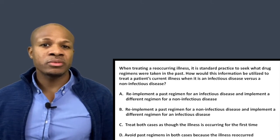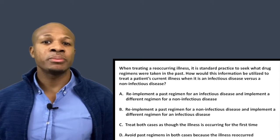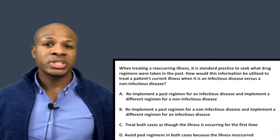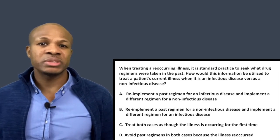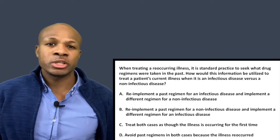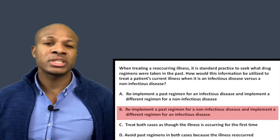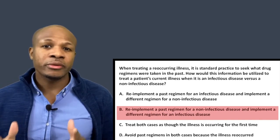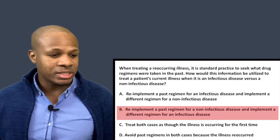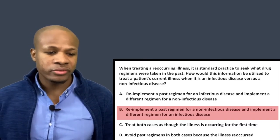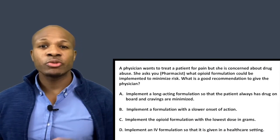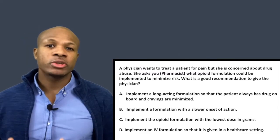When it comes to infectious disease, antibiotics can alter drug targets, and because of the risk of resistance you don't want to give the patient the same drug as last time — give them a different drug. Whereas for a non-infectious disease like obesity or hypertension, the drug target is likely the same, so you can give the same regimen that controlled blood pressure in the past. The correct answer is B: implement a past regimen for a non-infectious disease and implement a different regimen for an infectious disease.